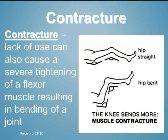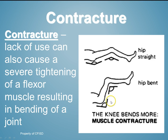Contracture is when lack of use can cause a severe tightening of a flexor muscle, resulting in the bending of a joint. Remember, flexing is decreasing the angle, so that muscle becomes stuck or tightened to the point where you are unable to straighten the joint, causing it to contract and stay contracted.